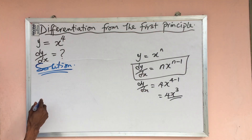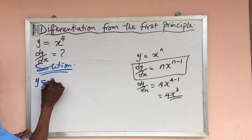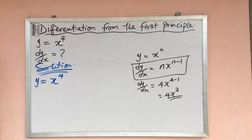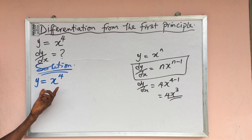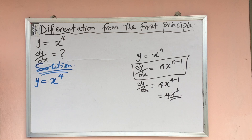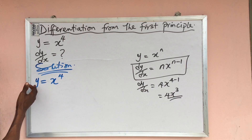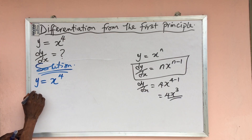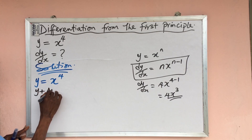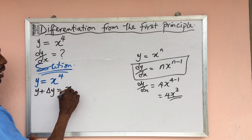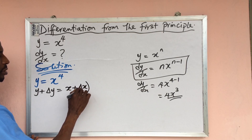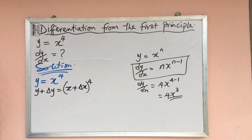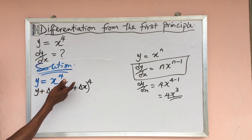Here we have y equal to x to the power of 4. From this point we now add δy to this side and also δx to the other side — a little change in both sides. So from here we're going to have: y plus δy equal to (x plus δx) all to the power of 4, because x here is raised to the power of 4.